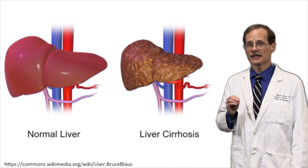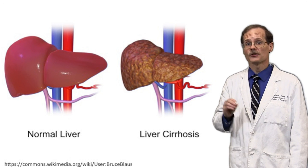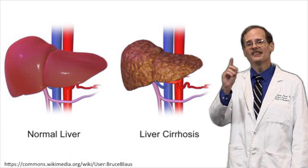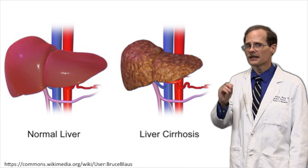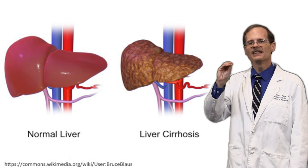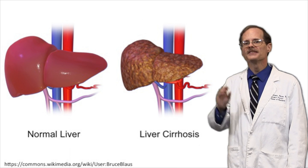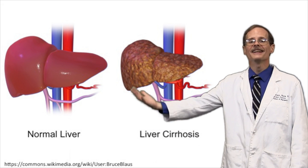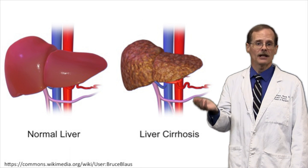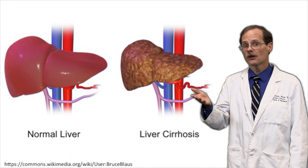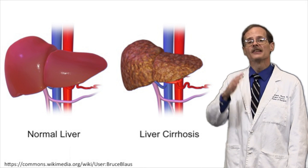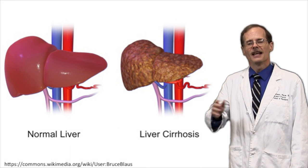Chronic liver disease can also cause reduced blood flow — not because the heart isn't pumping enough, but because the liver itself is resisting the flow of blood into the organ. Viral hepatitis or chronic alcoholism can cause cirrhosis of the liver.